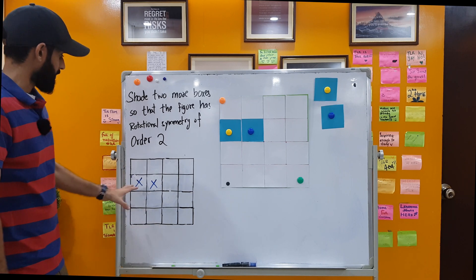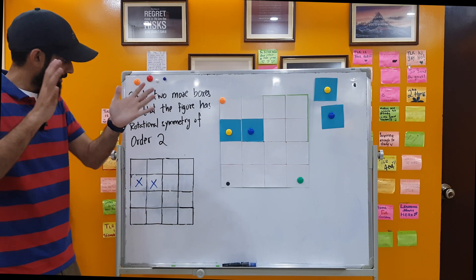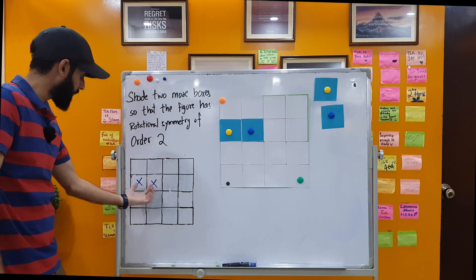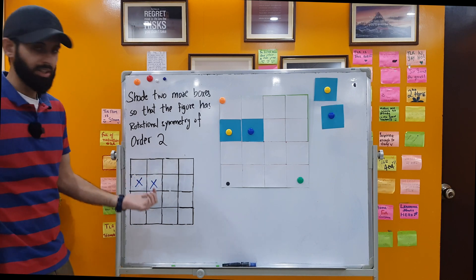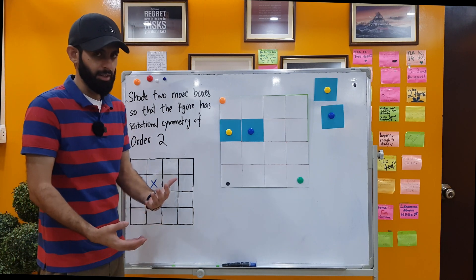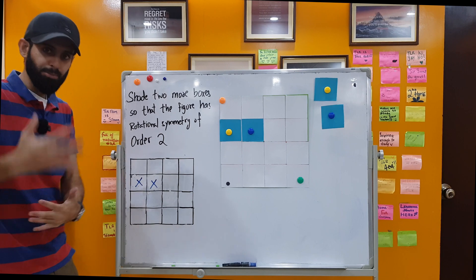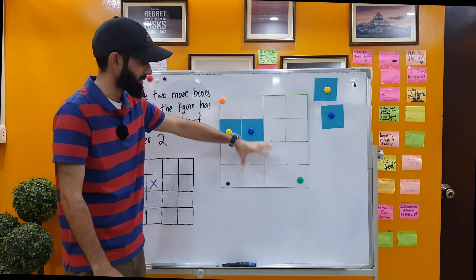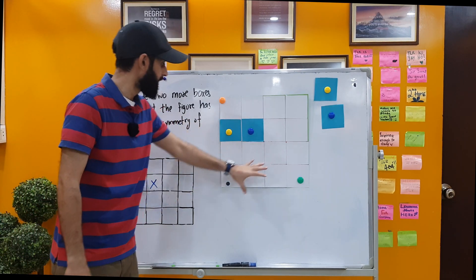So what you need to think is, what you need to visualize is where do you think these two squares are going to end up after you've rotated them 180 degrees. Now to help you be able to do that, I've replicated a 3D model of it.